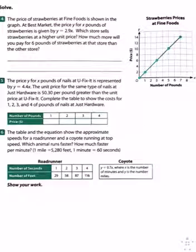Number four, the price of strawberries at Fine Foods is shown in the graph. At Best Market, the price for X pounds of strawberries is given by Y equals 2.9X. Which store sells strawberries at a higher unit price? How much more will you pay for 6 pounds of strawberries at that store than the other store? So I know Best Market is 2.9. For Fine Foods, I write down the points I can read clearly: 2 and 1 and 3 and 6.